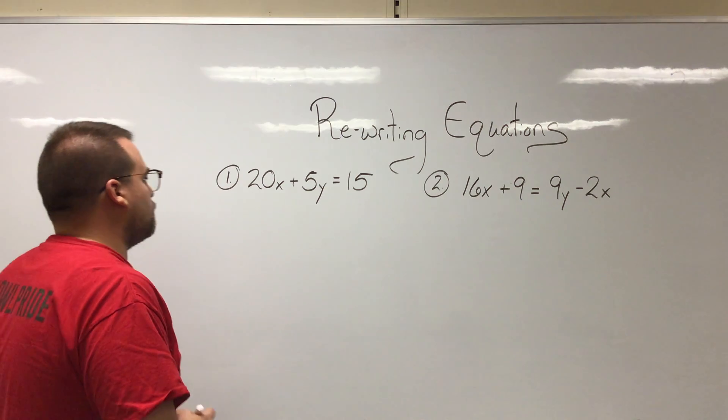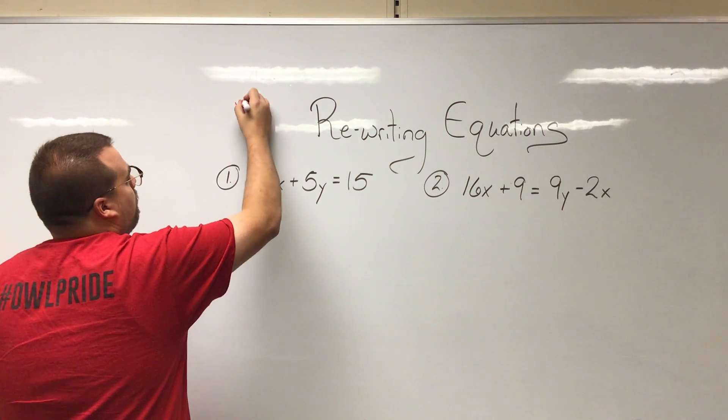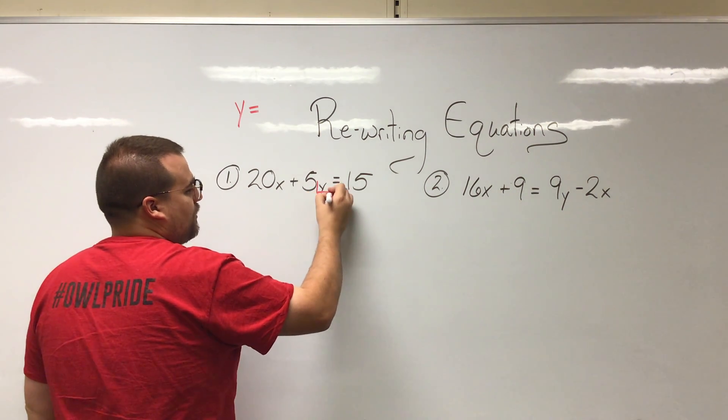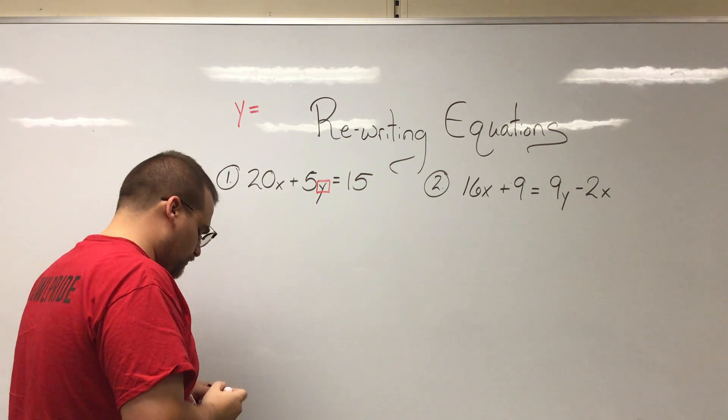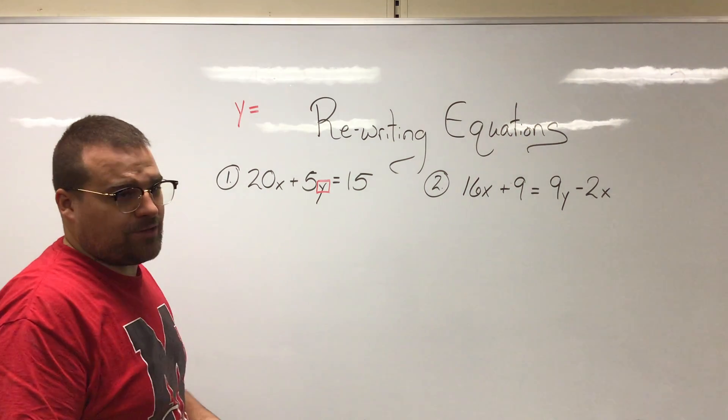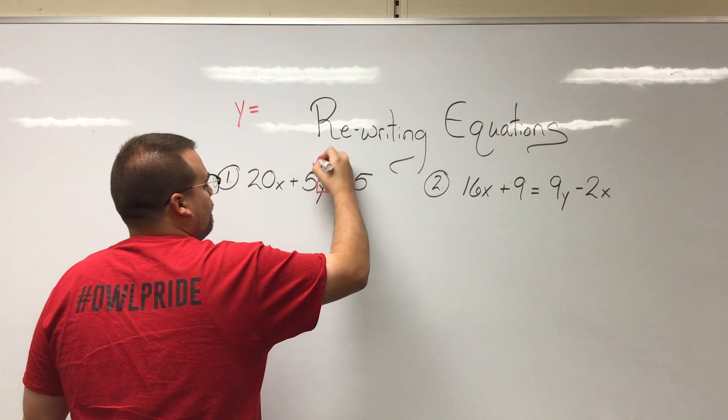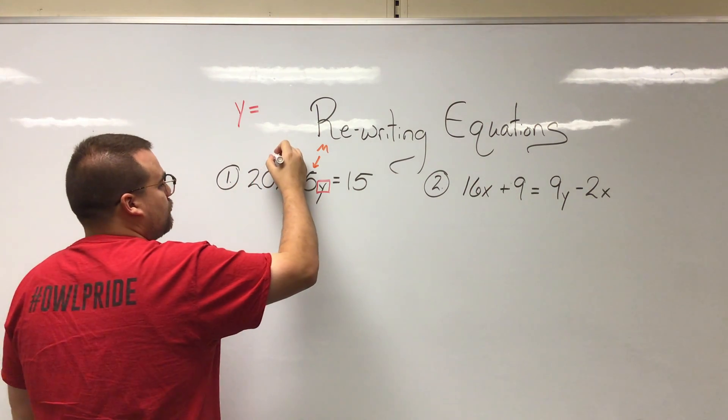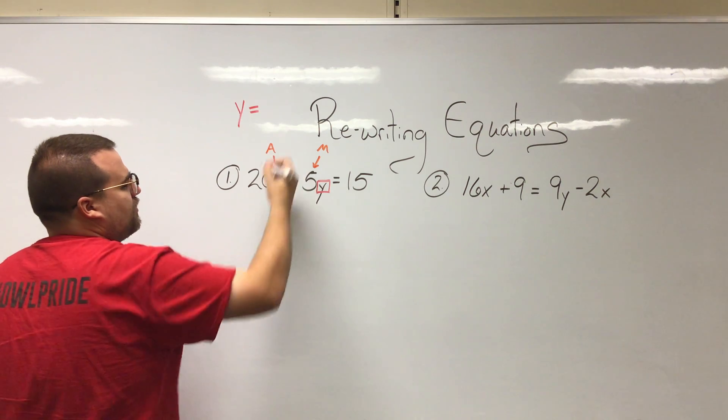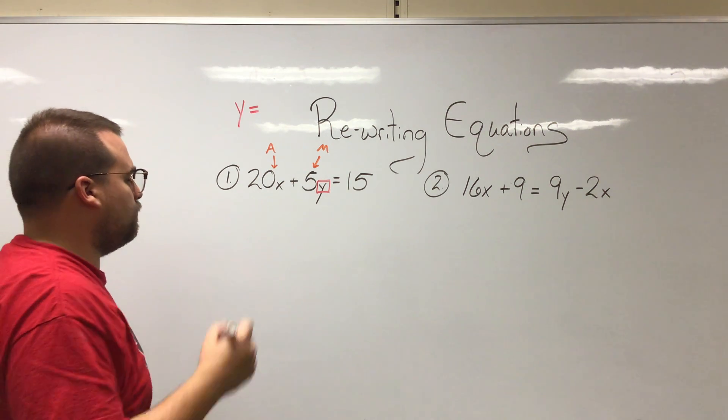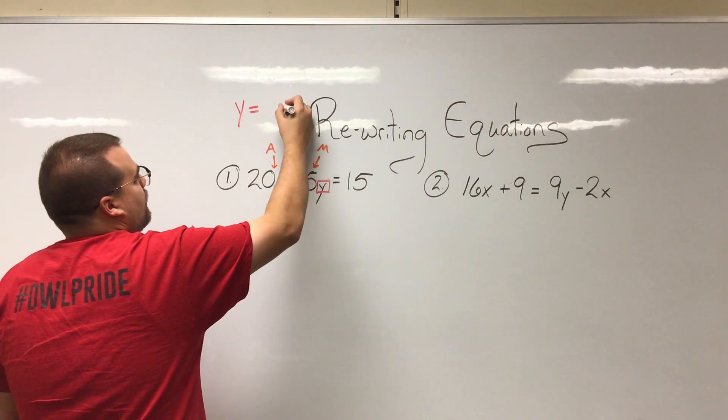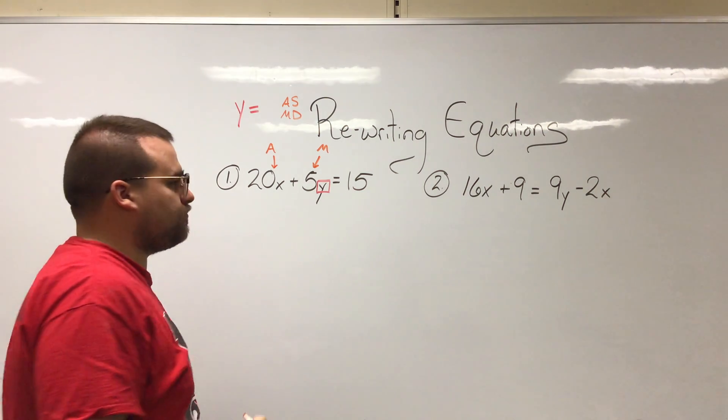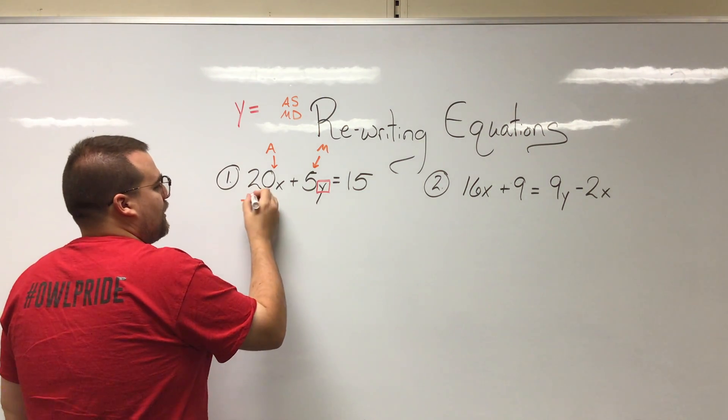Let's say on both of these problems we want to get y on its own, so y equals. I'm going to go ahead and recognize there's my y here and I'm going to point out what's happening around it. This 5 is multiplying it, and then this 20x as a whole, we treat that term as a single unit, is adding to it. So you always want to get rid of addition and subtraction first, then multiplication and division after that. So I'm going to go ahead and get rid of the addition.